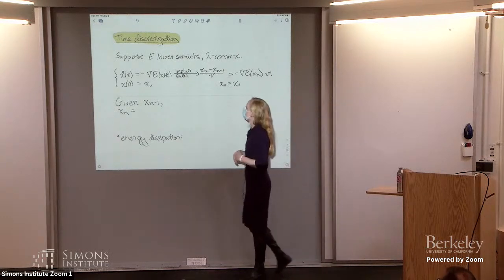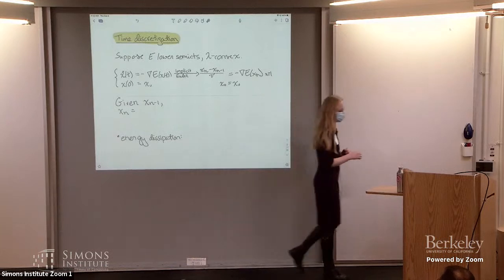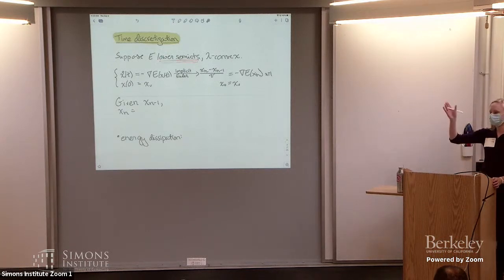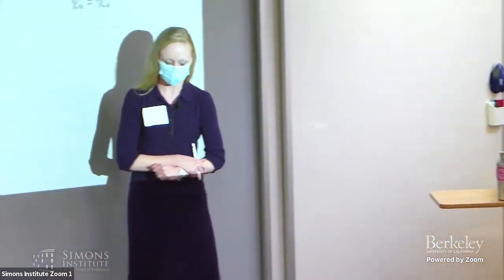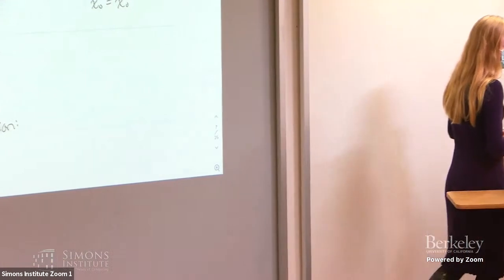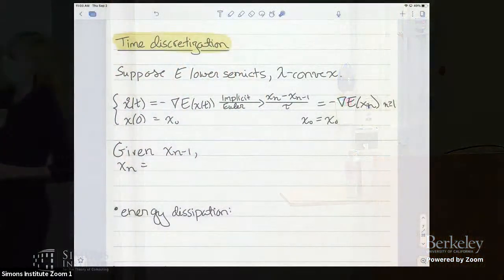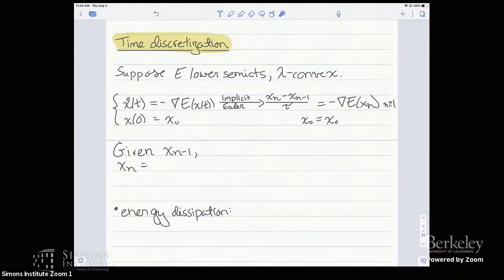What do I mean by time discretization? Even if your energy isn't continuously differentiable, you can get by with the existence and uniqueness theory of a gradient flow if it's merely lower semi-continuous. Under the assumptions of lower semi-continuity and lambda convexity — the key assumption for uniqueness — the gradient flow is well defined, whether using a generalized notion of gradient or just the classical gradient in Euclidean space.